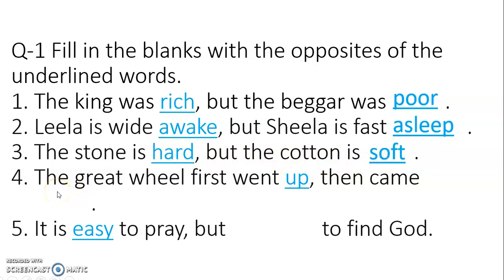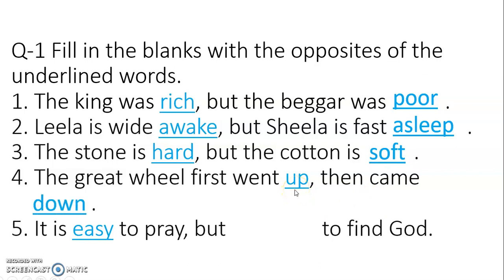Number four: the great wheel first went up, then came ___. The opposite of up — as you all know — is down. The great wheel first went up, then came down.